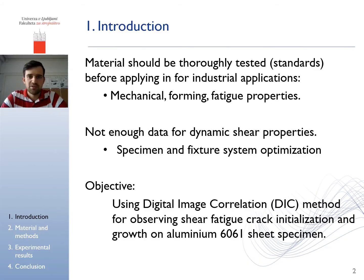For industrial applications, the material should be thoroughly tested following validated standards. From static tensile tests, we collect basic mechanical properties of some material. For more special applications, we need more specific data such as forming limit curves and for fatigue, low and high cycle fatigue tests. Despite all mentioned tests, there is still not enough data for shear properties, especially dynamic shear properties, which guided us in the development of our own fixture system and specimen geometry. Because measuring of shear strain is a non-trivial problem, we decided to use the DIC method.